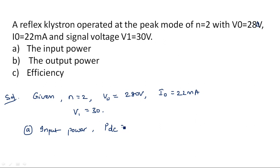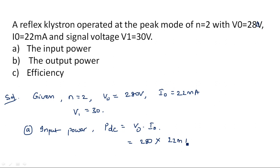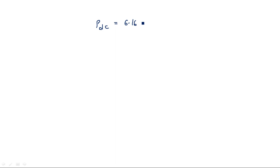PDC is the DC input power, which equals the applied anode voltage multiplied by the current induced by that voltage: V0 into I0. That is equal to 280 volts into 22 milliamperes, so PDC is equal to 6.16 watts.